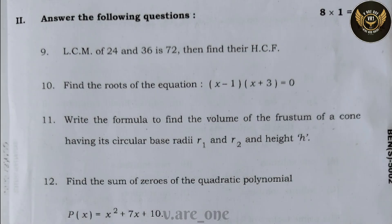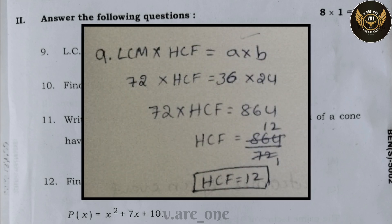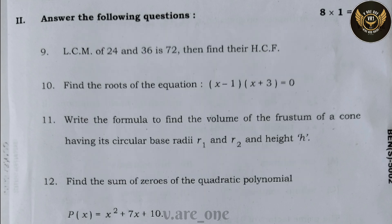Now the short answer section. Question number nine: the LCM of 24 and 36 is 72 — find their HCF. The correct answer is HCF = 12. Tenth question: find the roots of the equation (x − 1)(x + 3) = 0.